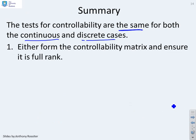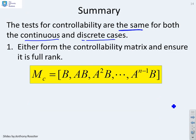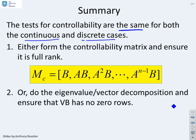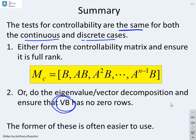We either form the controllability matrix and ensure it's full rank, and you'll see it's the same controllability matrix in both cases, or we do an eigenvalue eigenvector decomposition, and we check that the matrix vb has no 0 rows. What we've said earlier is the format of the controllability matrix is often the easiest test to use.